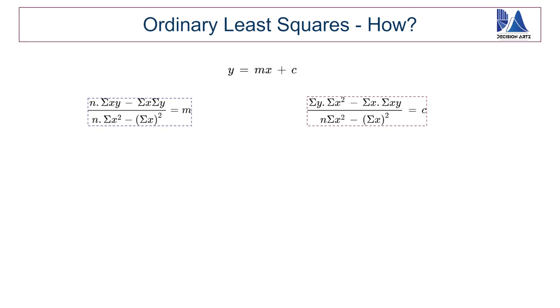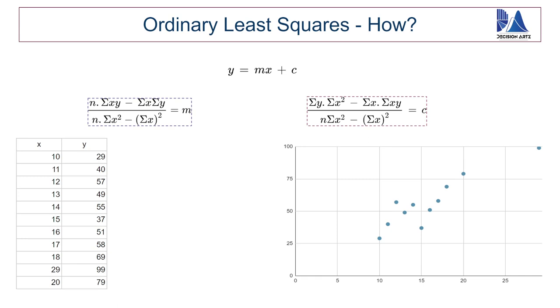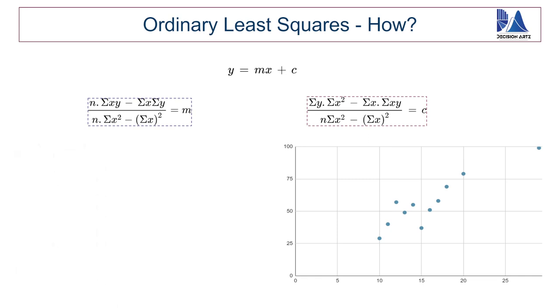Alright, it's time to plug what we learned thus far into real data. And let's find m and c. This is just a set of random observations I just came up with. Now, I have tabulated it as X and Y, and I have plotted them against each other in a scatter plot.